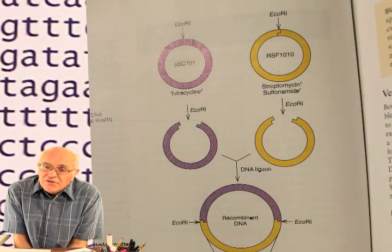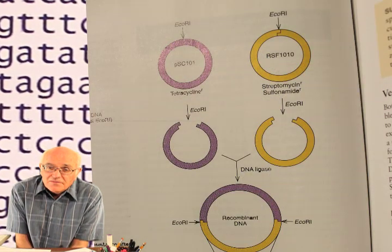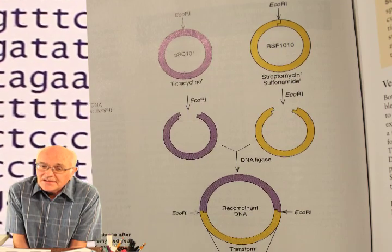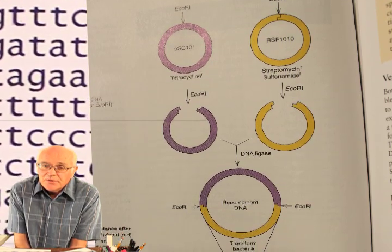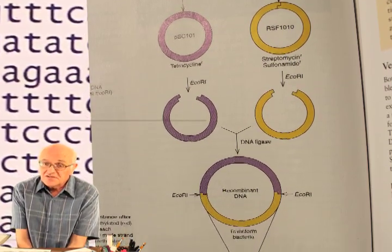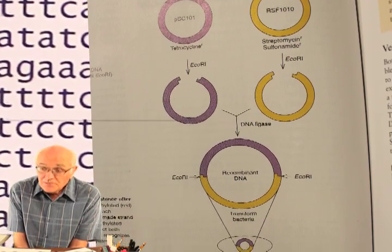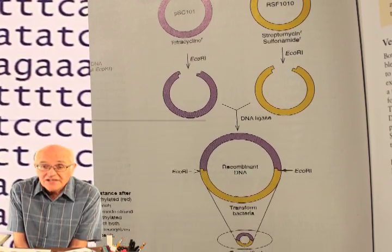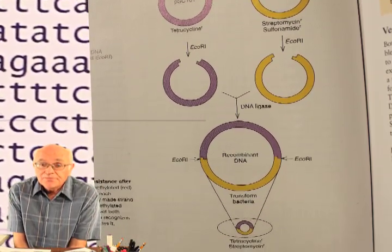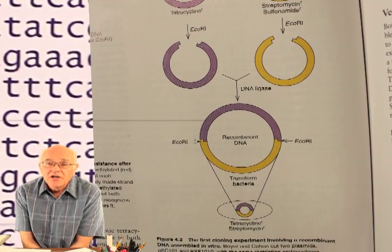One of the tools in molecular biology involves taking DNA apart and stitching it back together. This has been referred to as molecular scissors and molecular glue. This comes from sticky ends that are produced by restriction endonucleases.